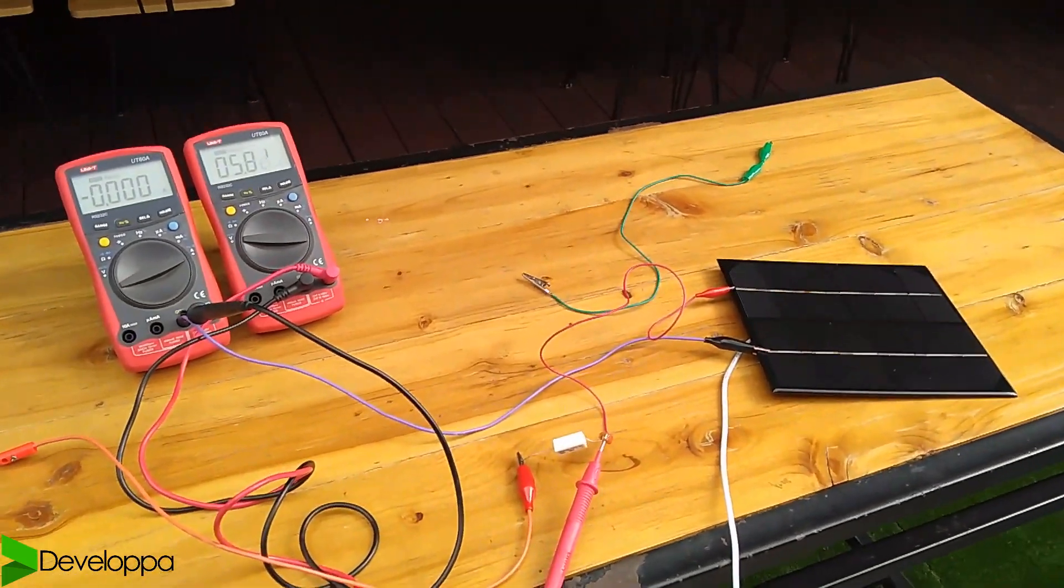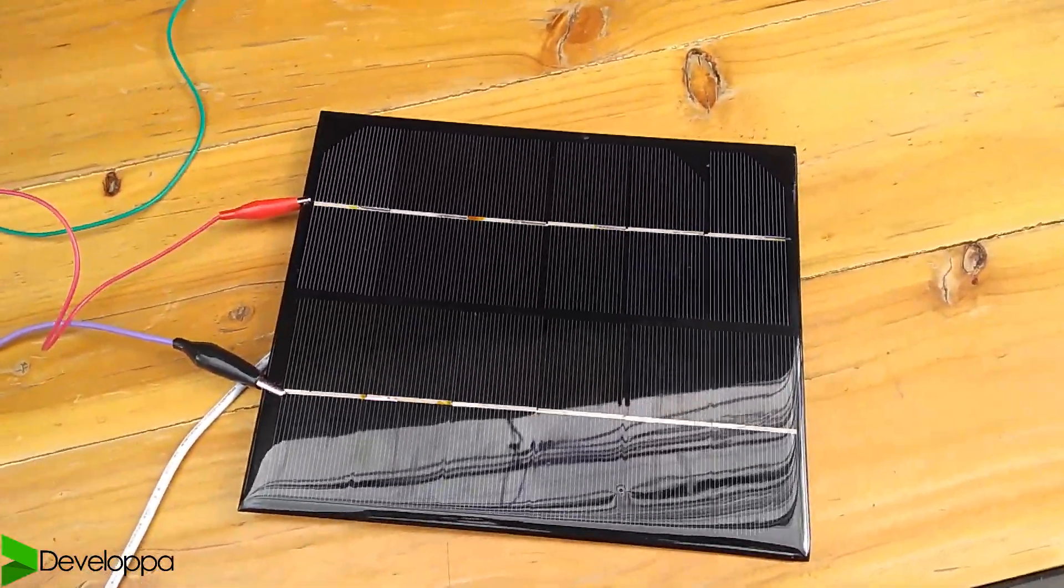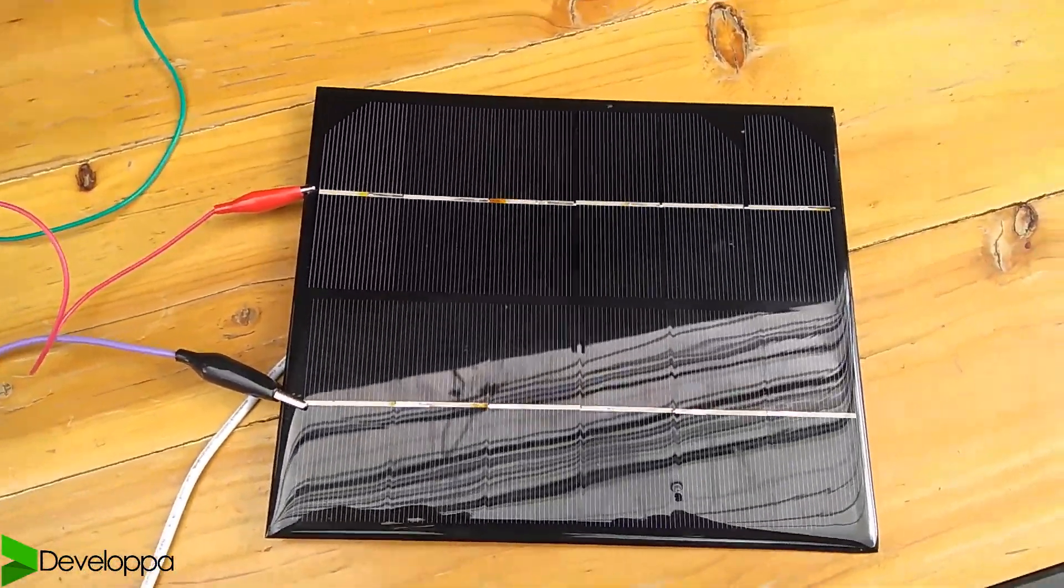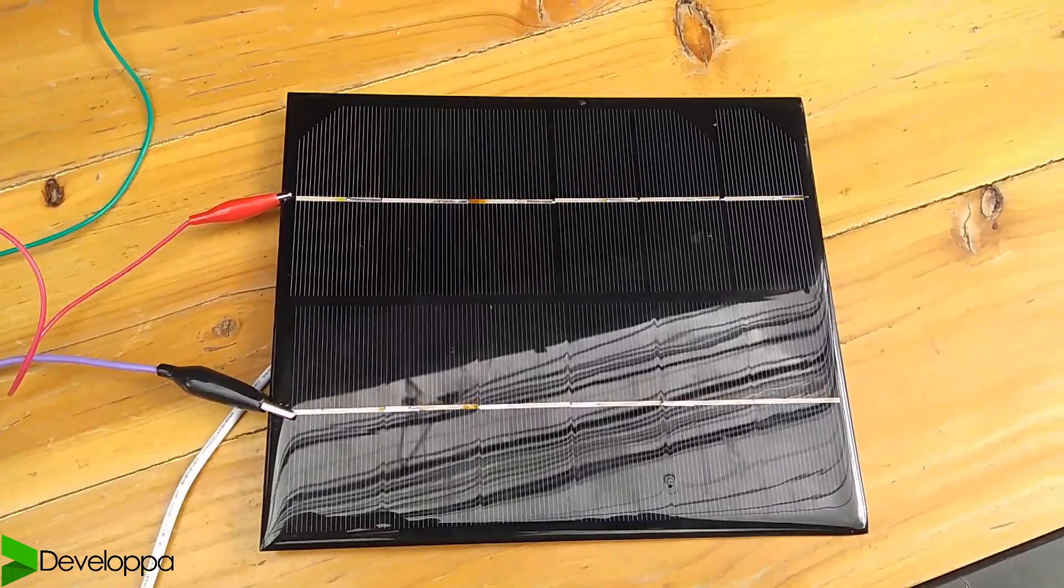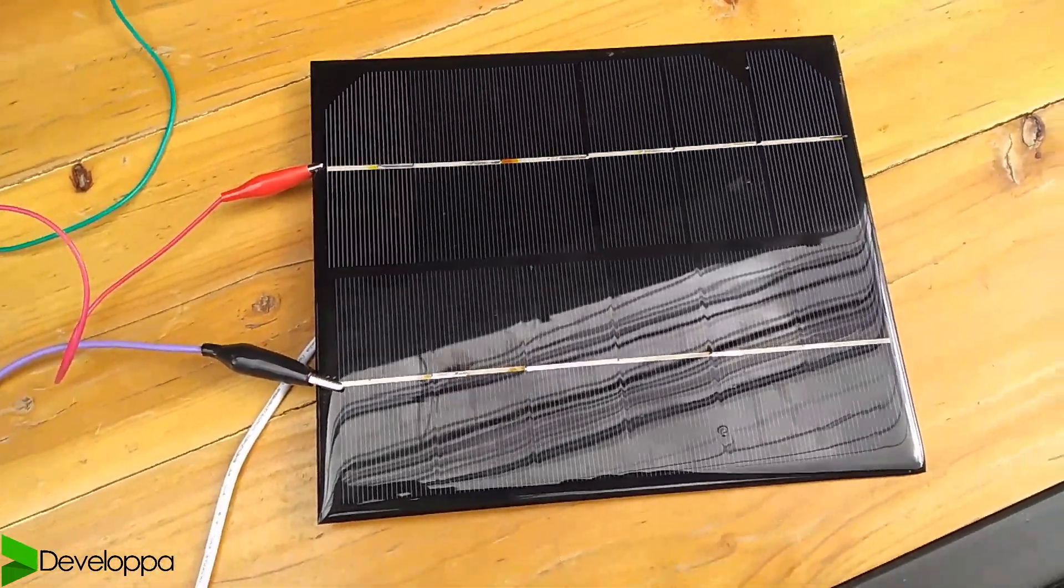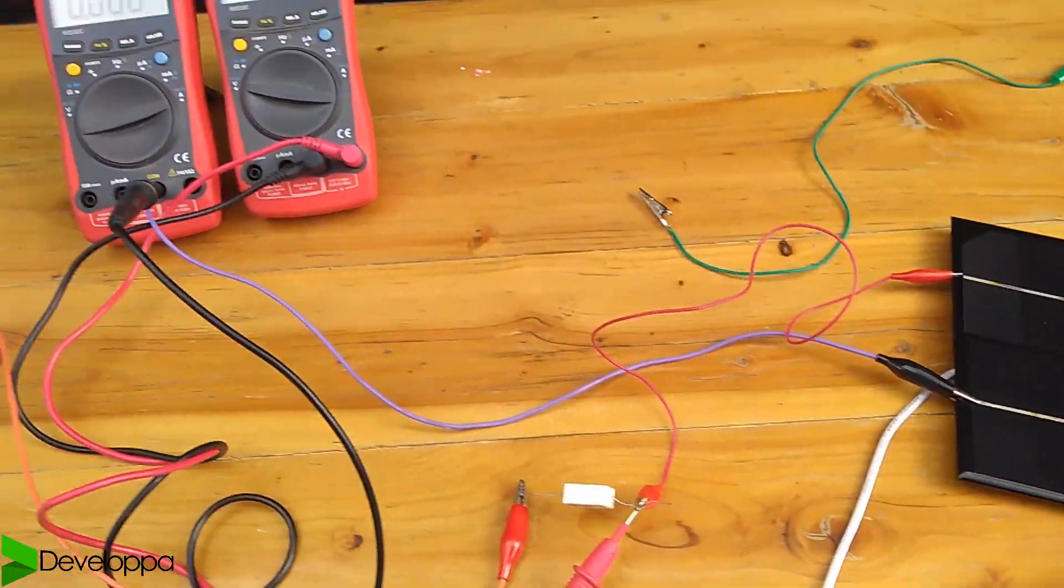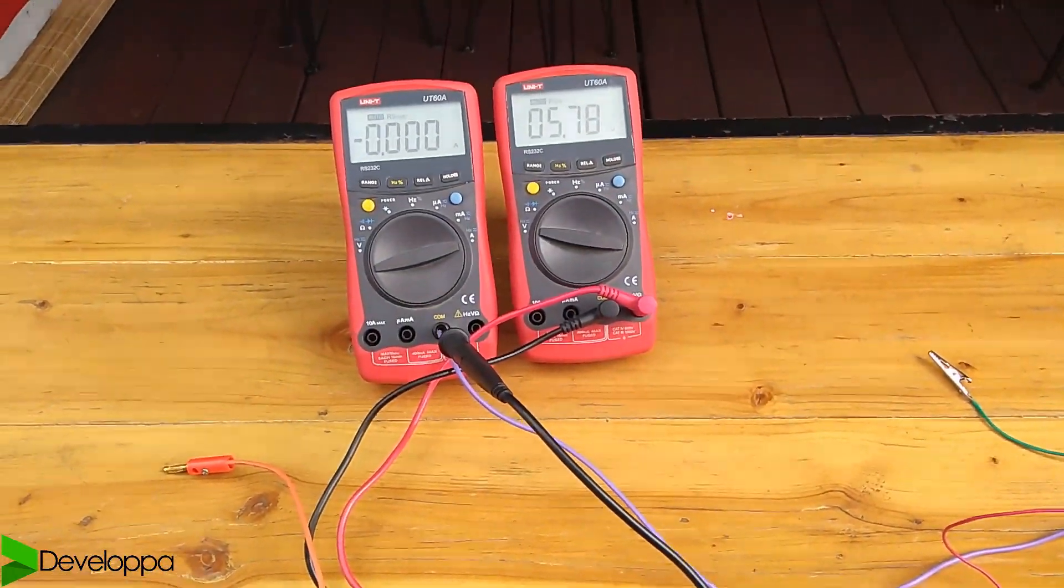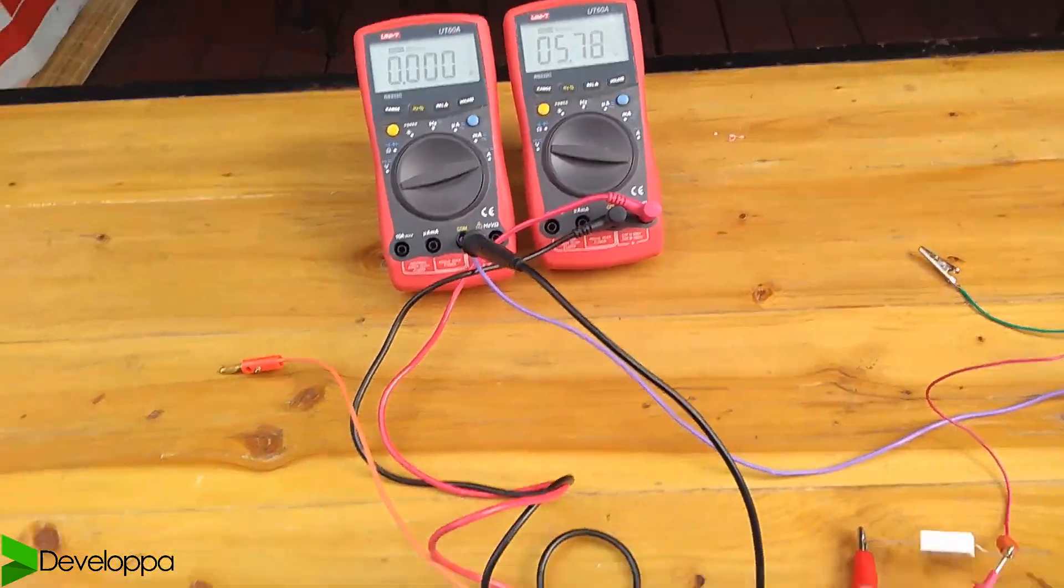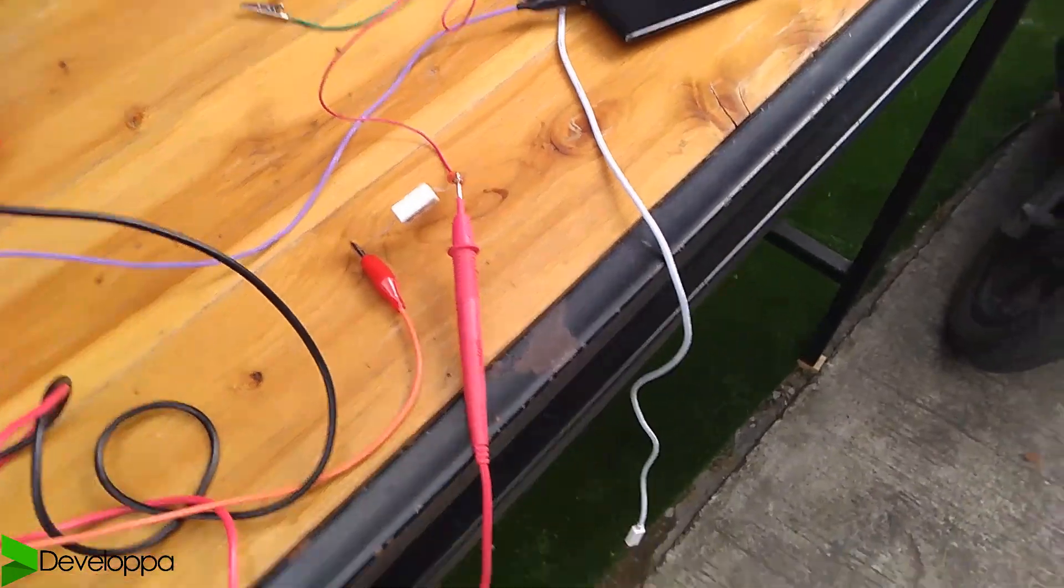Hi guys, this is Roberto from Developpa. We're reviewing here the solar panel I bought from China. This is a 6 volt, 1 amp solar panel, or that's how it is rated, for a total of 6 watts. So what I'm doing here is actually testing it to see if we can get that power output.